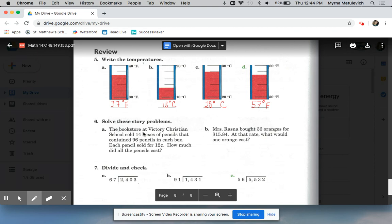Solve these story problems. The bookstore at Victory Christian School sold 14 boxes of pencils that contained 96 pencils in each box. Each pencil sold for 12 cents. How much did all the pencils cost? There are a couple ways you could have solved this, but basically you had to multiply all the numbers together. So I did 96 times 12 cents to find out how much was the cost of one box, and then I multiplied that answer times 14 to see how much it was for 14 boxes, and I got $161.28. I hope you got that too.